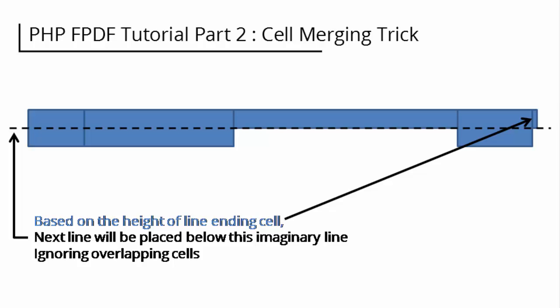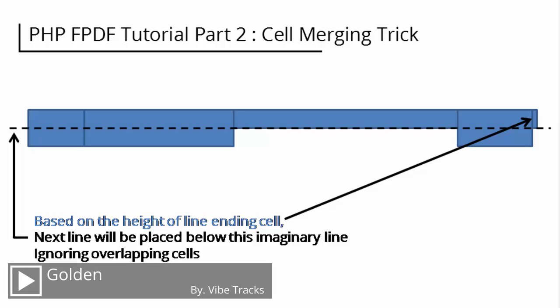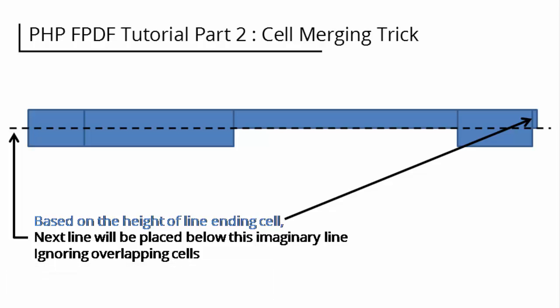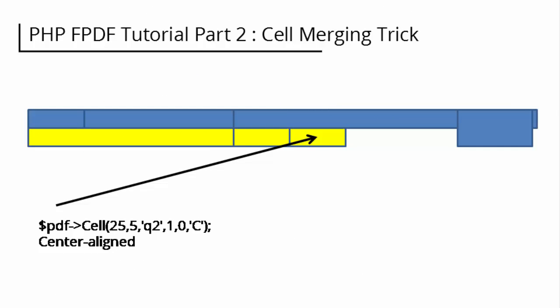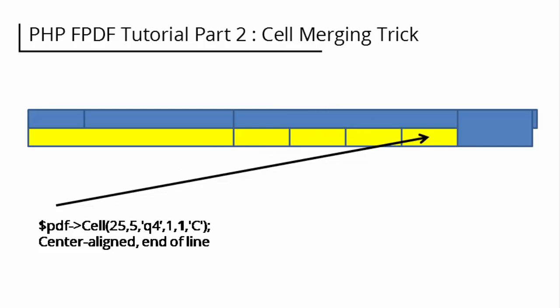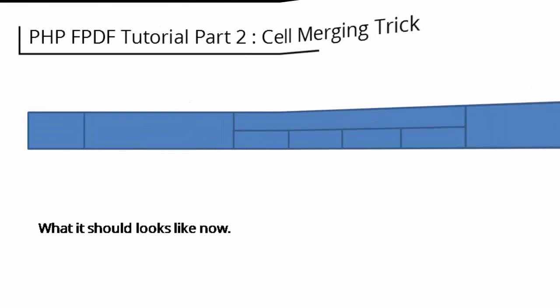This is because the vertical position of the next line is based on the last cell defined as the line-ending cell. If the cells in the line are taller than the line-ending cell, the next line will overlap those cells. The first cell in the next line is placed immediately below the imaginary line, as shown in this illustration. Because the first and second cells of the previous line occupied two rows, we need to make a dummy invisible spacer cell with width 70, no border, and no content. The next four cells are normal cells. This is the end of the second line, because the next cell is already occupied by a cell from the first line. Next lines and beyond will be normal cells containing data.